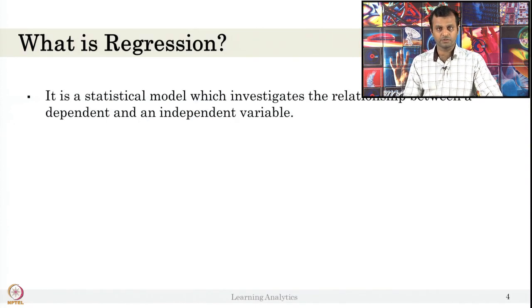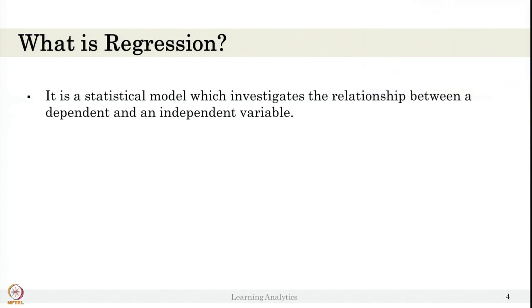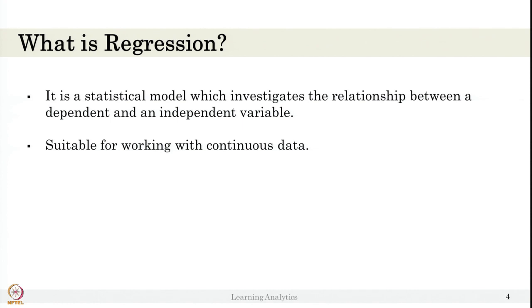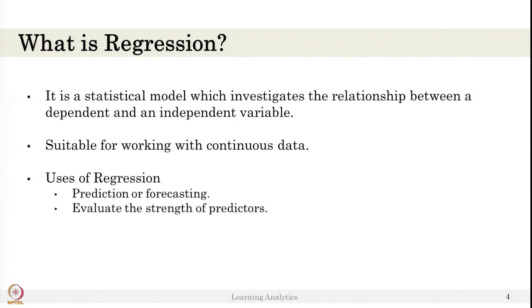What is regression? It is a statistical model which investigates the relationship between dependent and independent variables. We already saw regression briefly — it identifies the linear relationship between dependent and independent variables. The assumption that there is a linear relationship is very, very important. It is suitable for working with continuous data — for example, instead of classifying into bins A or B, you want to predict a continuous value like 75 or 76.5. Regression is used for predicting or forecasting future events, evaluating the strength of predictors, and determining which independent variable is strongly associated with the dependent variable.